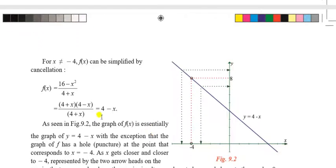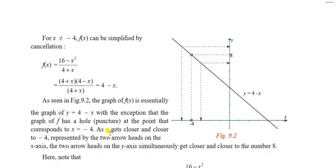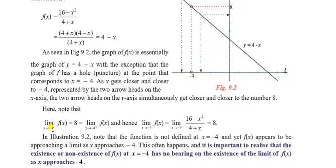For x ≠ −4, f(x) can be simplified by cancellation: using the identity a² − b² = (a+b)(a−b), we get 16 − x² = (4+x)(4−x), so f(x) = (4+x)(4−x)/(4+x) = 4 − x. As x → −4, f(x) → 4 − (−4) = 8. Therefore: left-hand limit = 8, right-hand limit = 8. Both equal 8, so the limit at x = −4 is 8. This is the very important conclusion — even though the function is not defined at −4, the limit exists and equals 8.